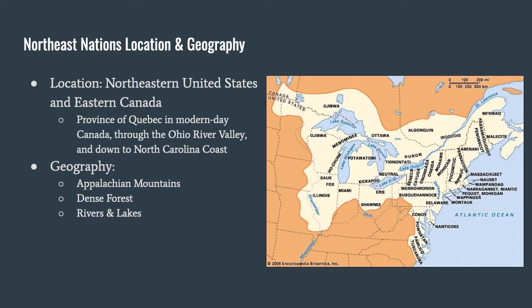Some of the geography landmarks that are going to impact the Northeast nations' way of life: they've got parts of the Appalachian Mountains, there are a lot of dense forests, and there are many rivers and lakes, including the Great Lakes around Michigan, Wisconsin, and New York.